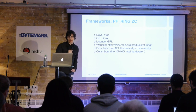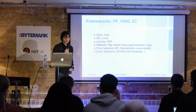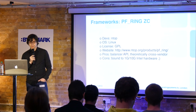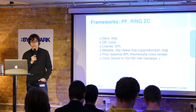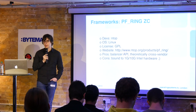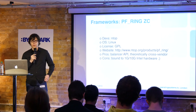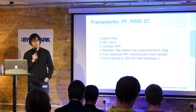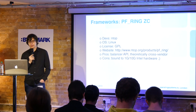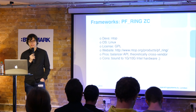Then there's PF_RING Zero Copy, written by the ntop people. It runs on Linux only and is GPL licensed. It has a really sleek API with a balancer — you just tell it how many threads you want, and threads fetch packet after packet without worrying about gory details of where packets come from or go. Theoretically it's cross-vendor, like netmap, but in practice it only works on Intel drivers.